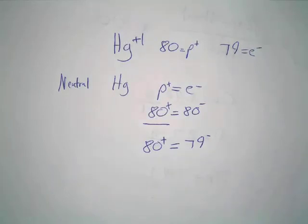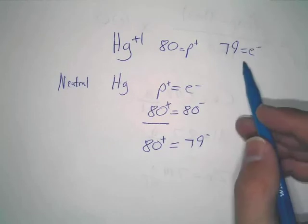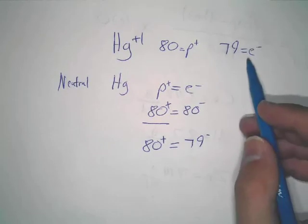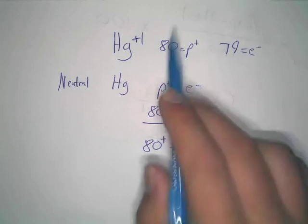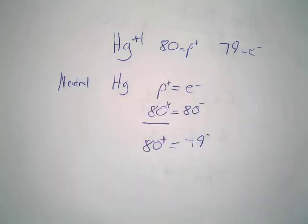Now, this is the key to see here. You have 80 plus charges, 79 negative charges, which is why you end up writing a positive one charge. Does anybody have a question on this?